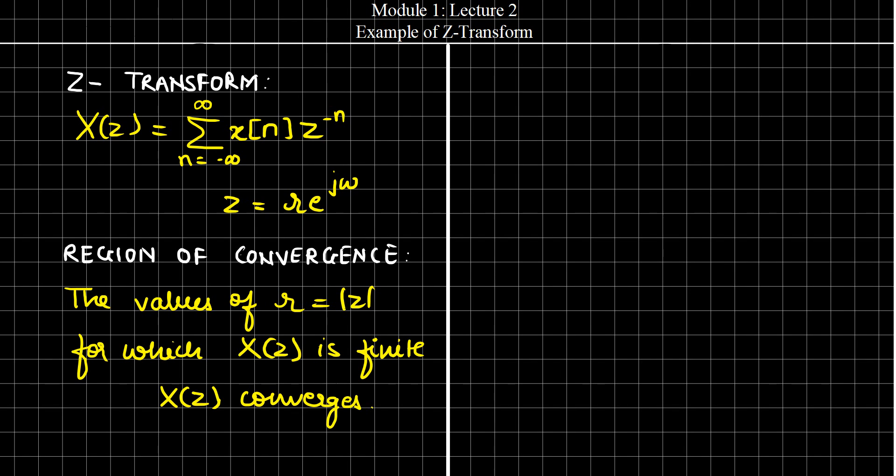Let us try finding Z-transform of a very basic signal given by X(n) equals 1 by 2 to the power n times u(n), where this u is the unit step signal.